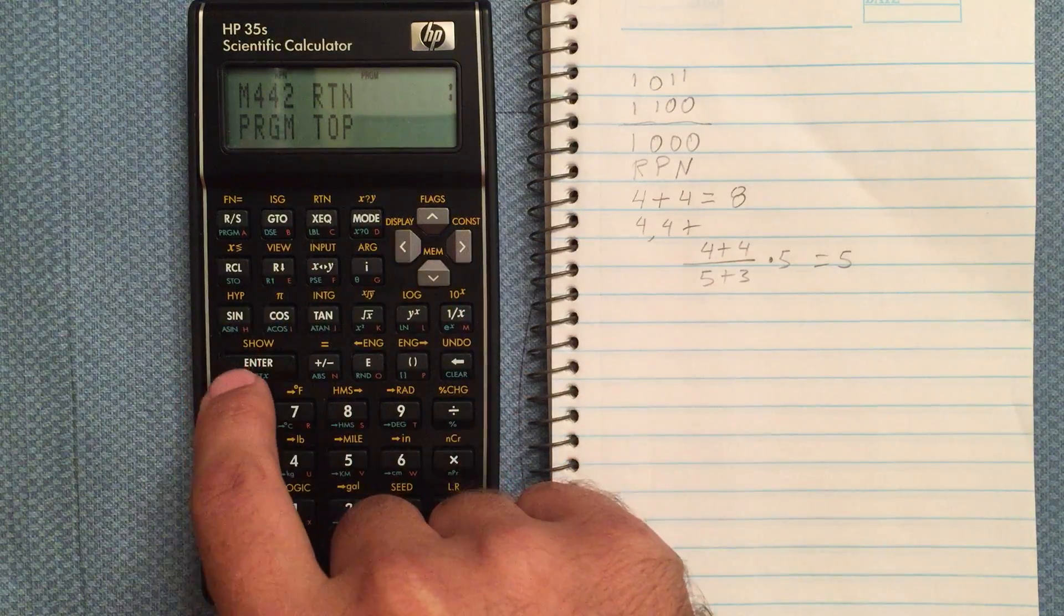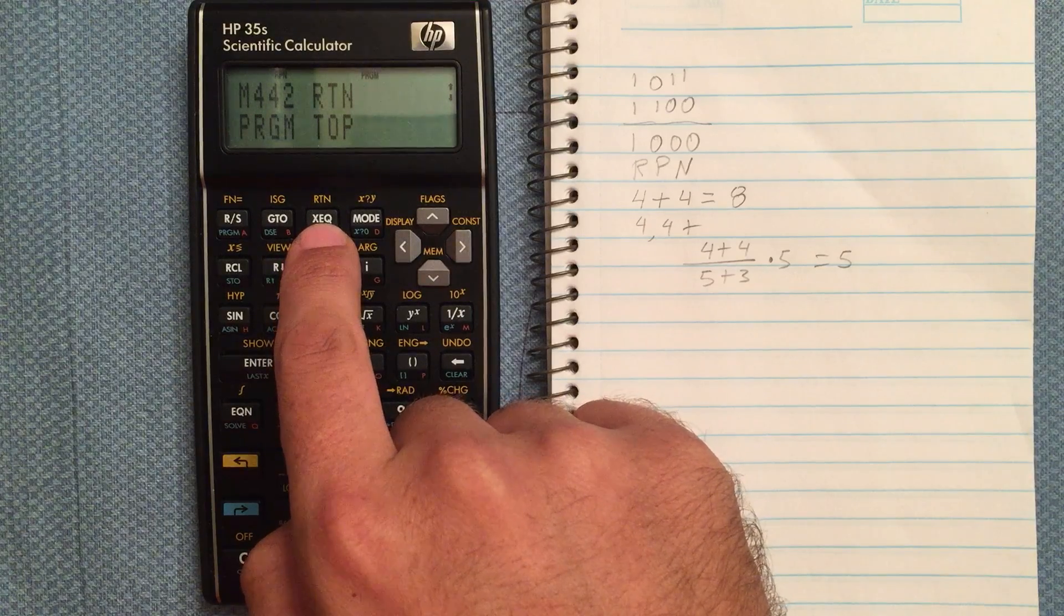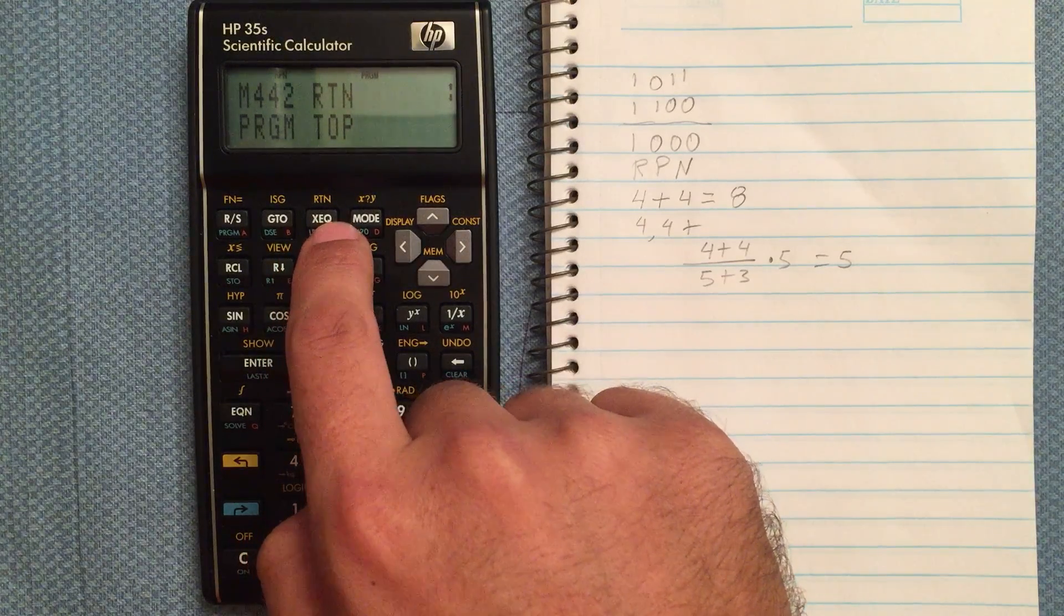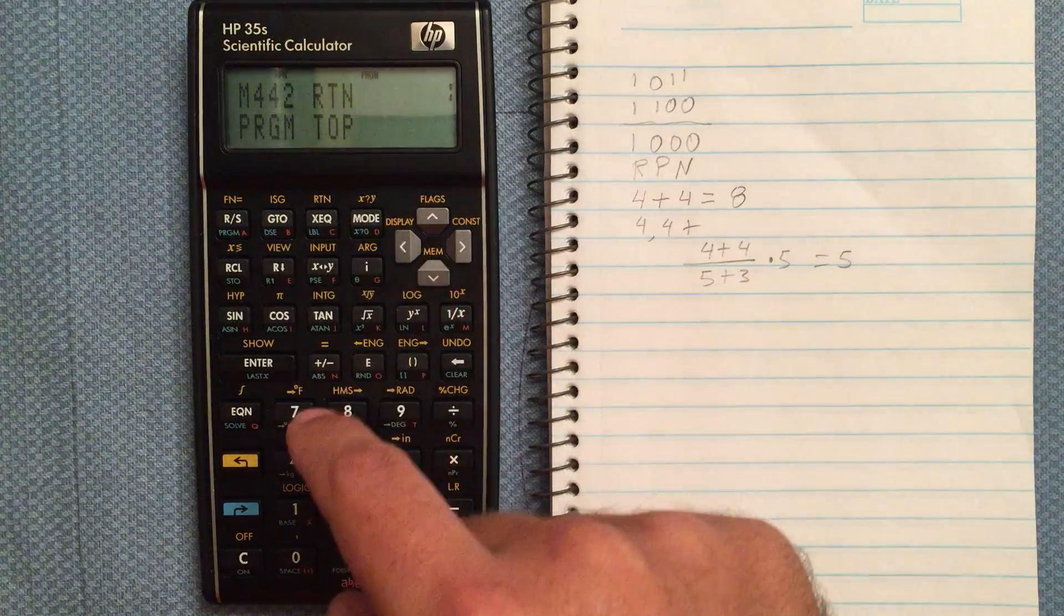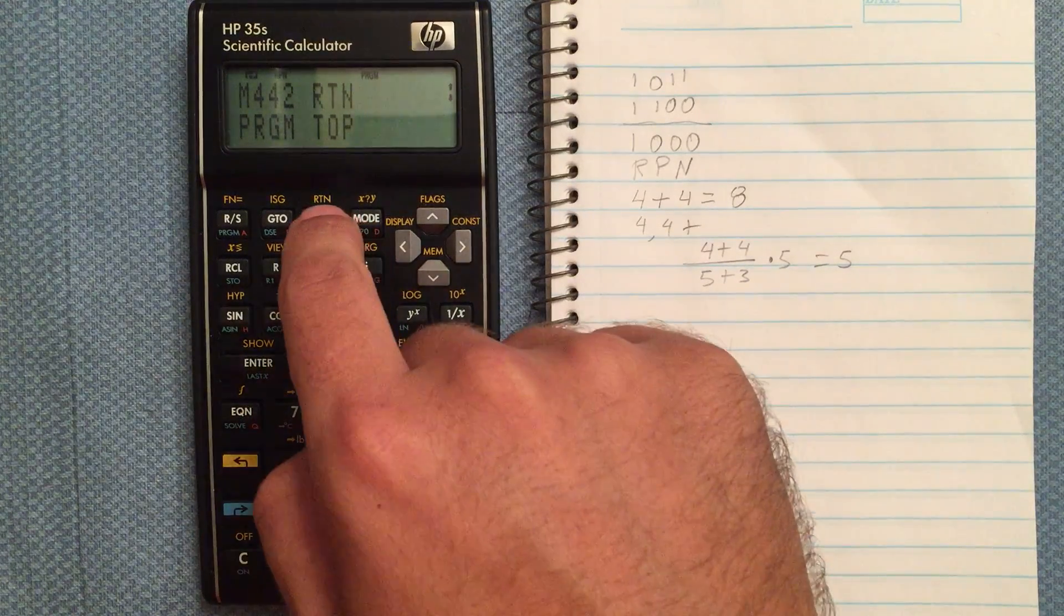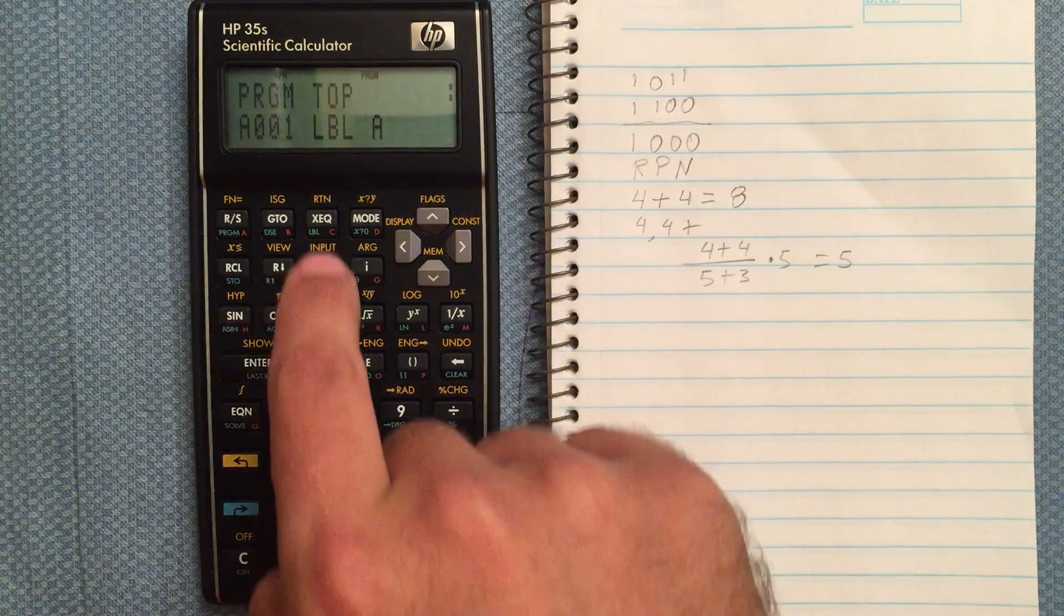Let's enter in a new label. A label lets the execute function know which program you want to run. So I do a label and then say I want to enter in A for my label.